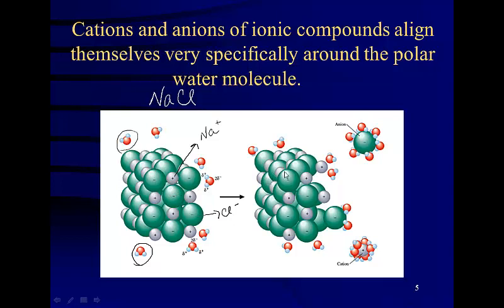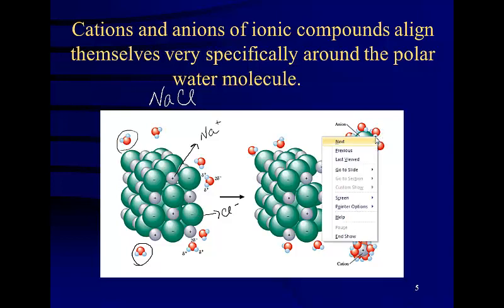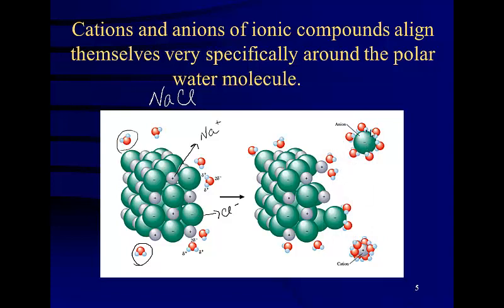and it dissociates in a particular manner. Notice that the cation gets surrounded by the negatively charged oxygens on the water, and the anion gets surrounded by the positively charged hydrogens, the positively charged hydrogens on the water. So keep that in mind when you're thinking of salts. Electrolytes, they orient themselves in a very particular manner.